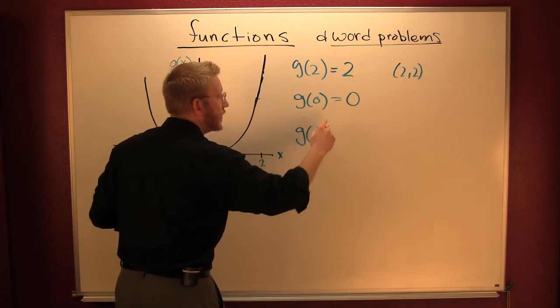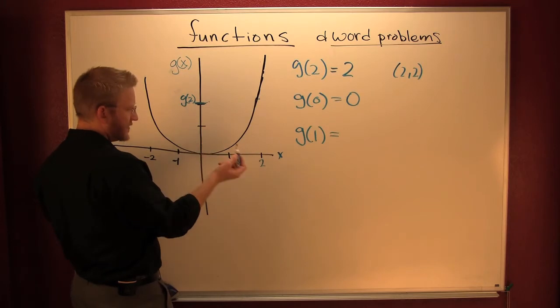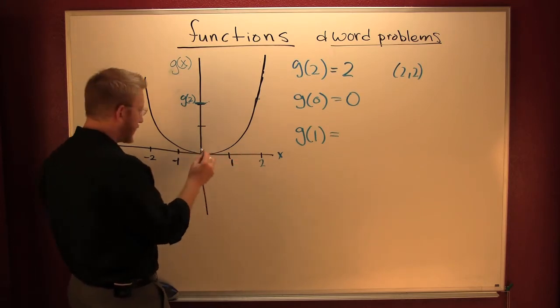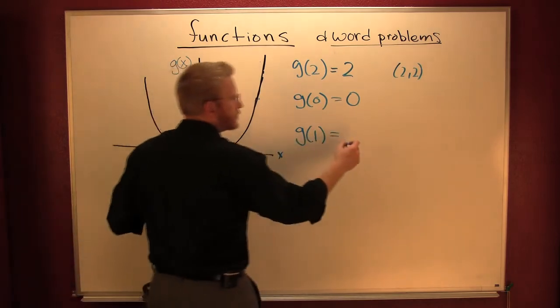Let's look at G of one. When I'm over here at one, what is that? I'm gonna call it a quarter - 0.25 sounds good.